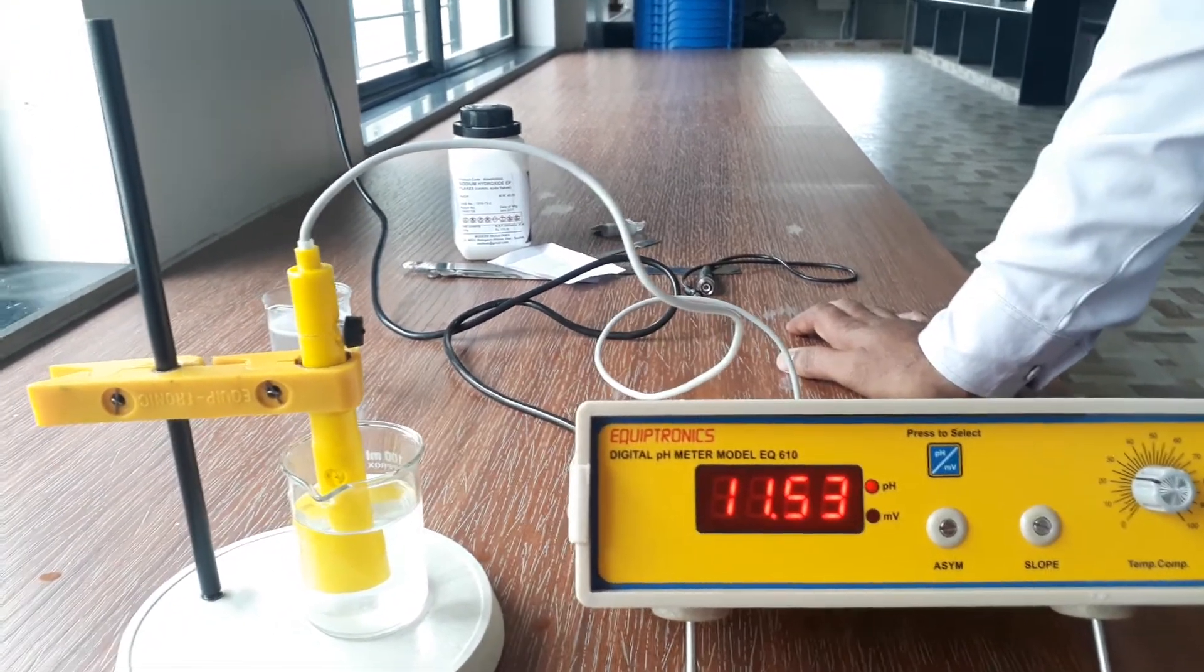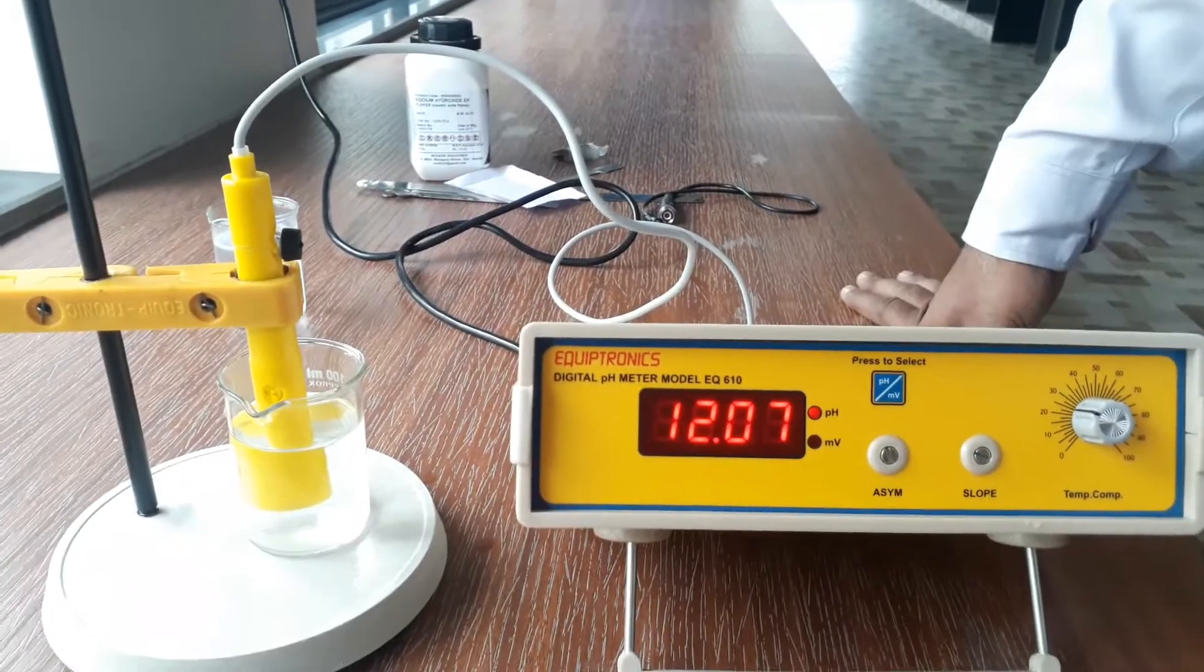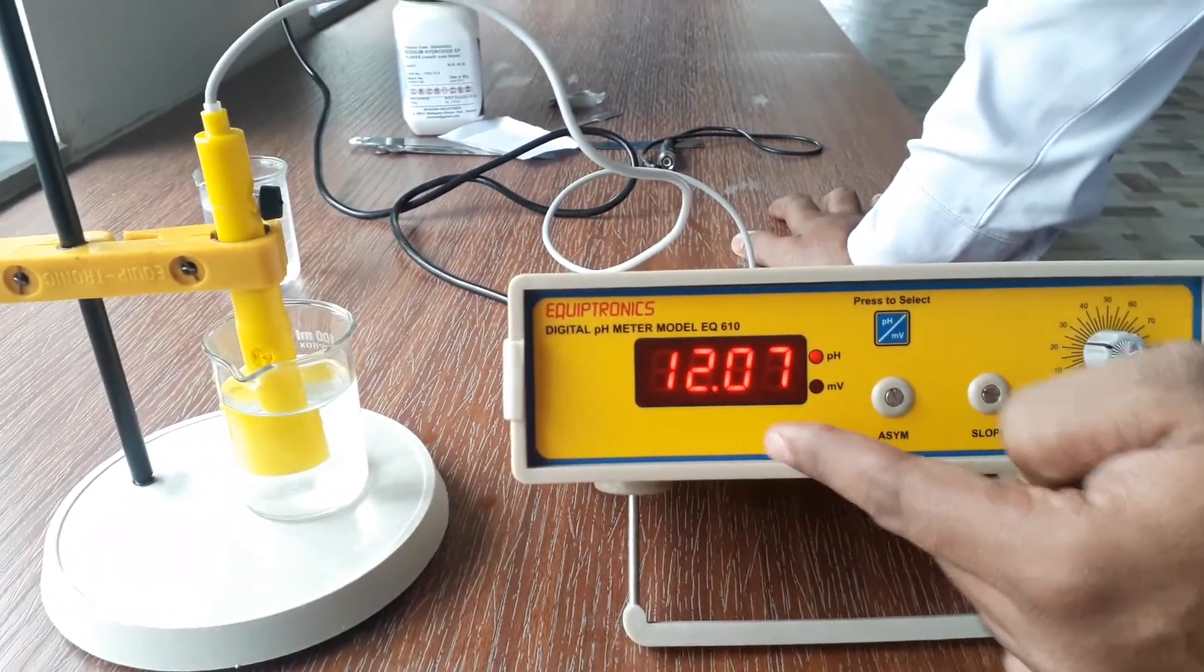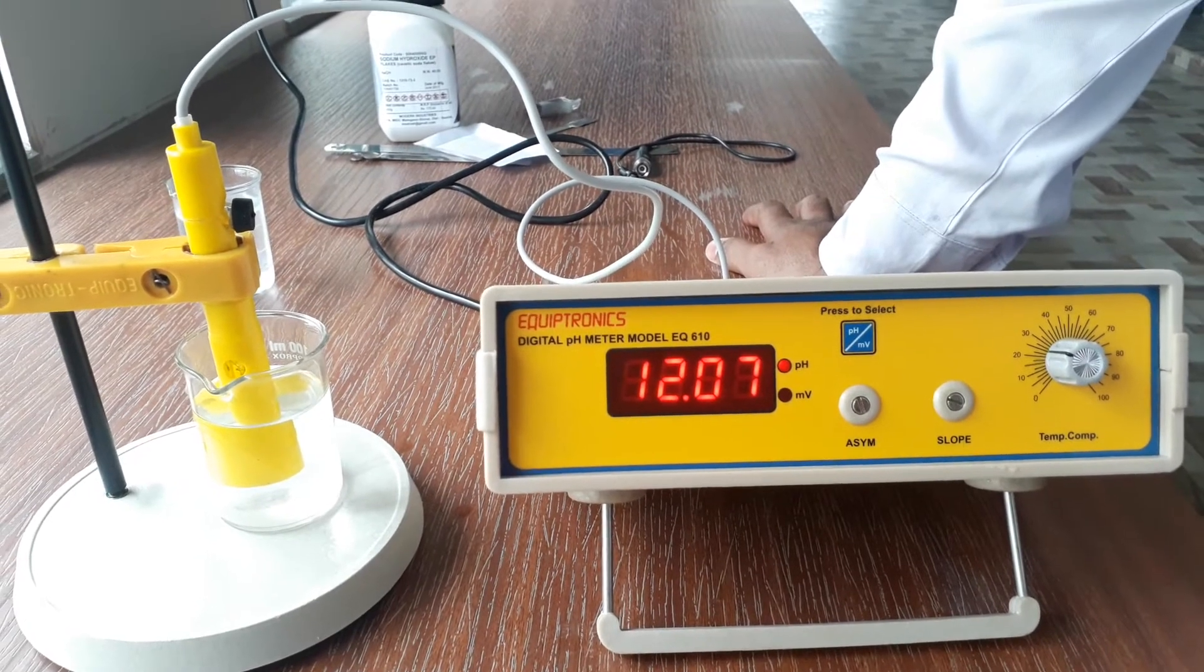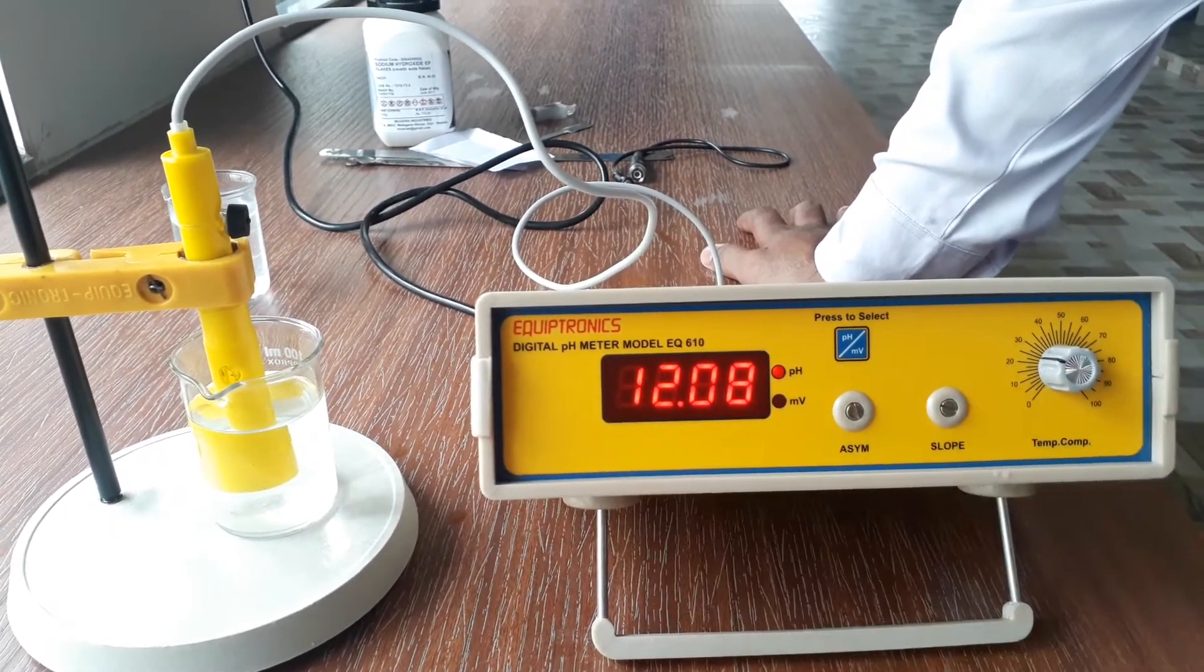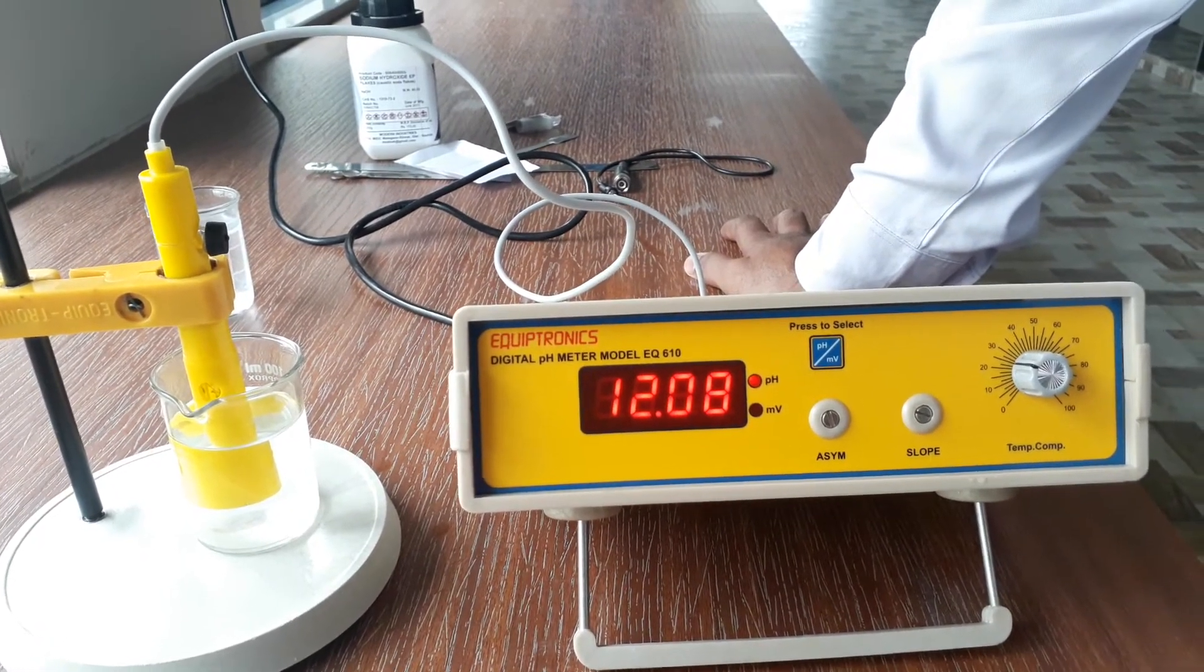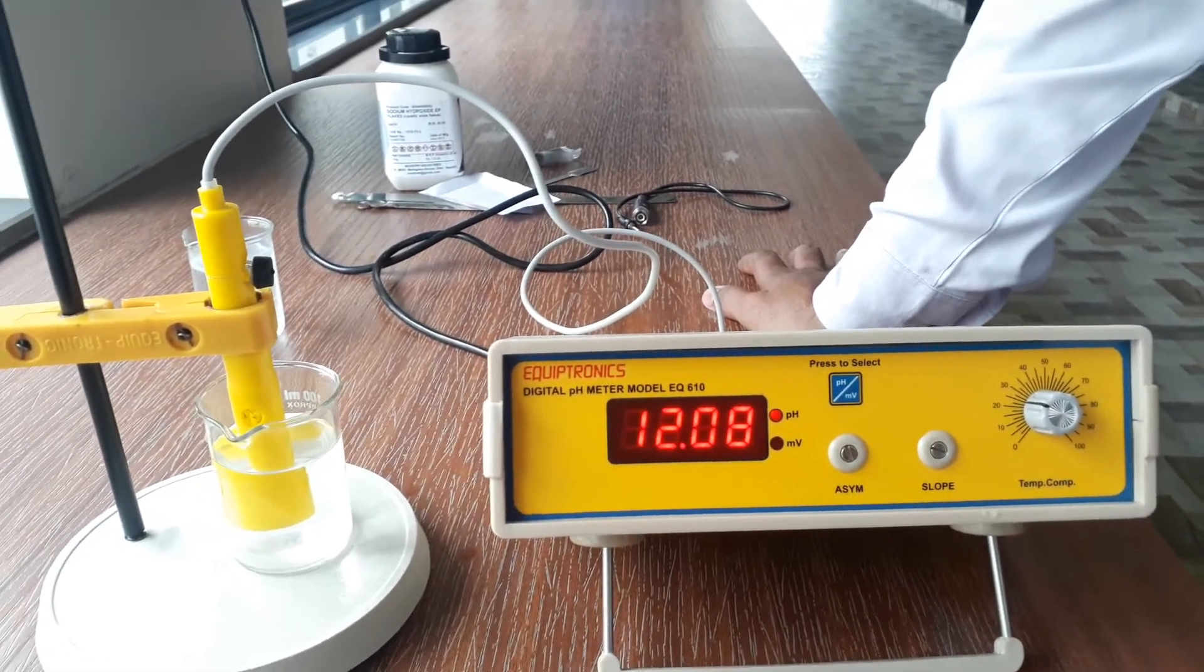We will wait for making it constant. Now you can see after some time we got a constant reading, that is 12.07. So this may be 0.1 molar NaOH or whatever. This reading shows that it is a NaOH solution because we know that the base which is showing 12 pH is nothing but NaOH. So in this way we can use pH meter for measuring exact pH values of solution.